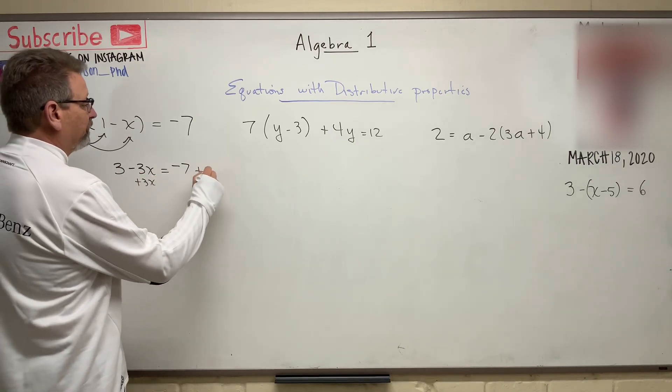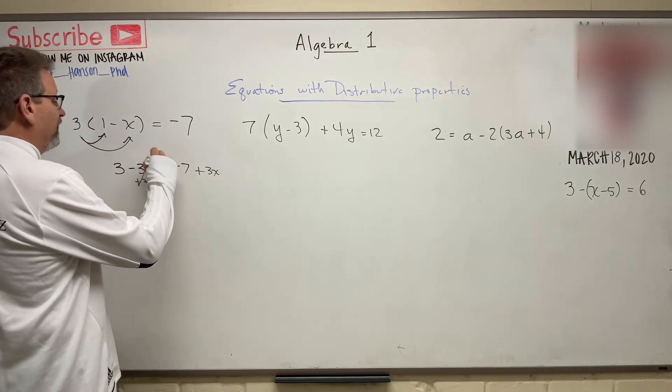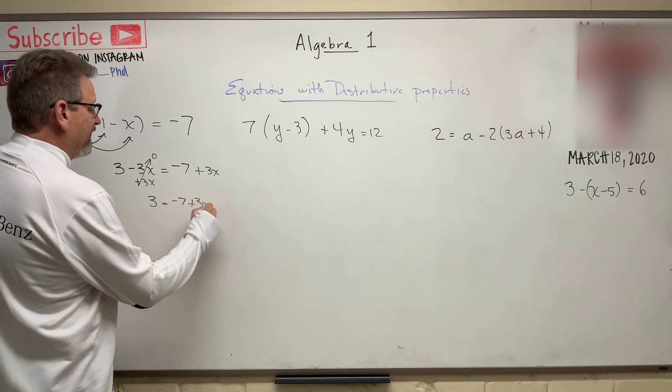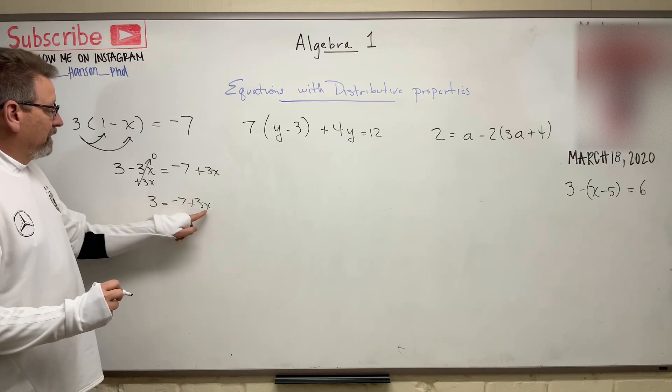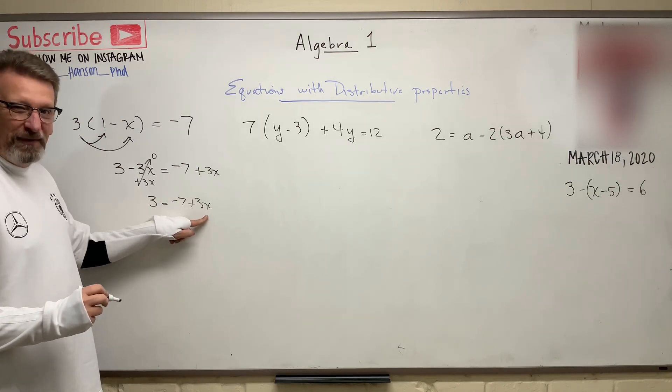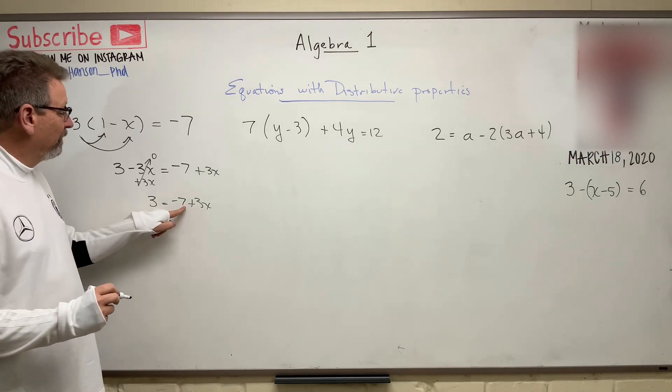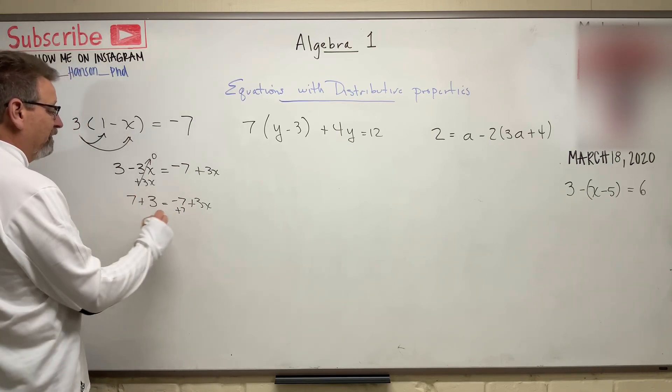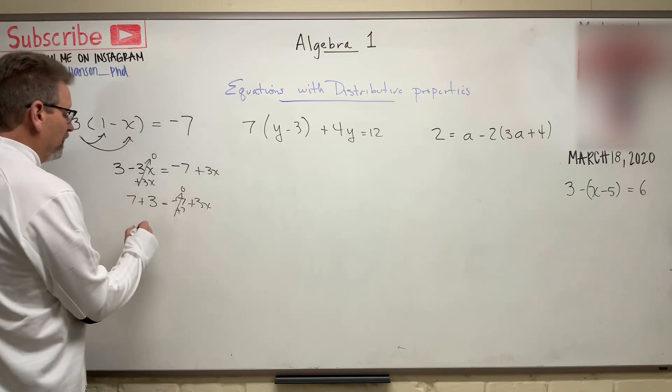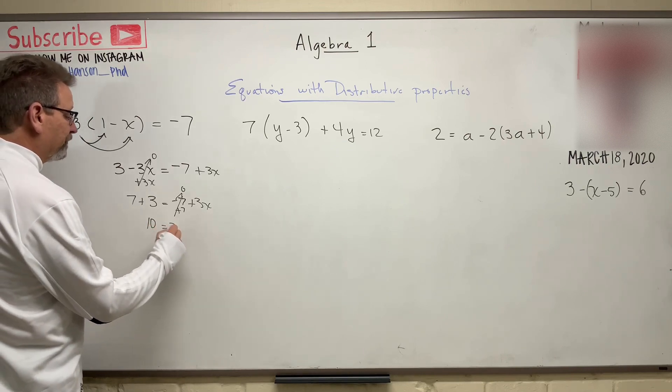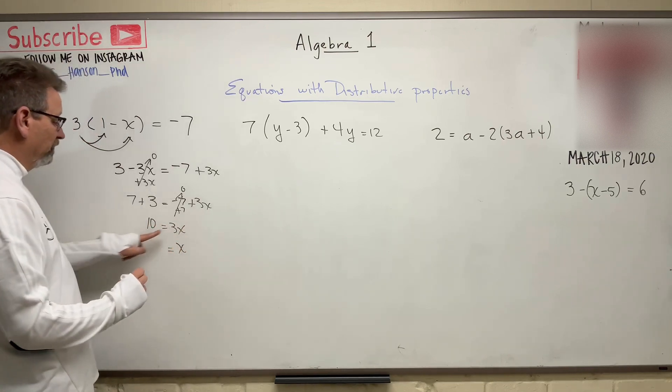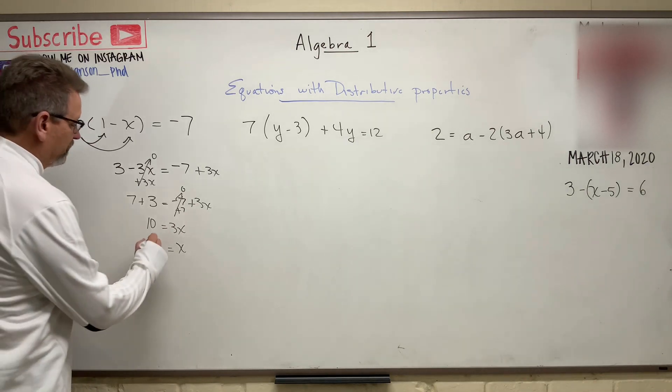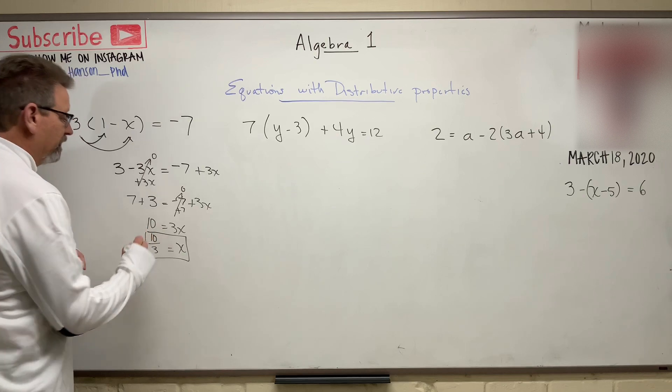So I'm going to plus 3x here, and I'm going to plus 3x there. This goes to zero, and now I have 3 is equal to minus 7 plus 3x. I got my x over here, and now he's positive. I like for him to be positive. So then I'm going to move this guy to this side, so I'm going to add 7 there, add 7 there. That goes to zero.